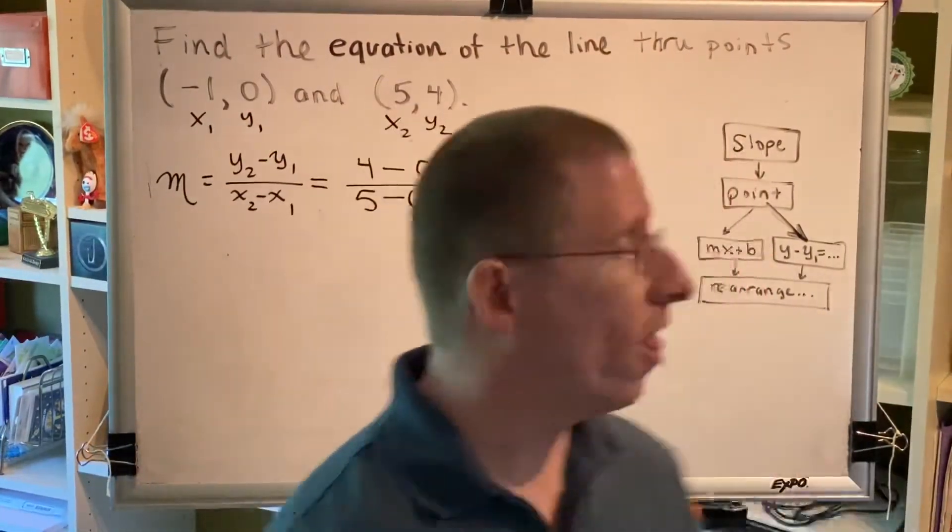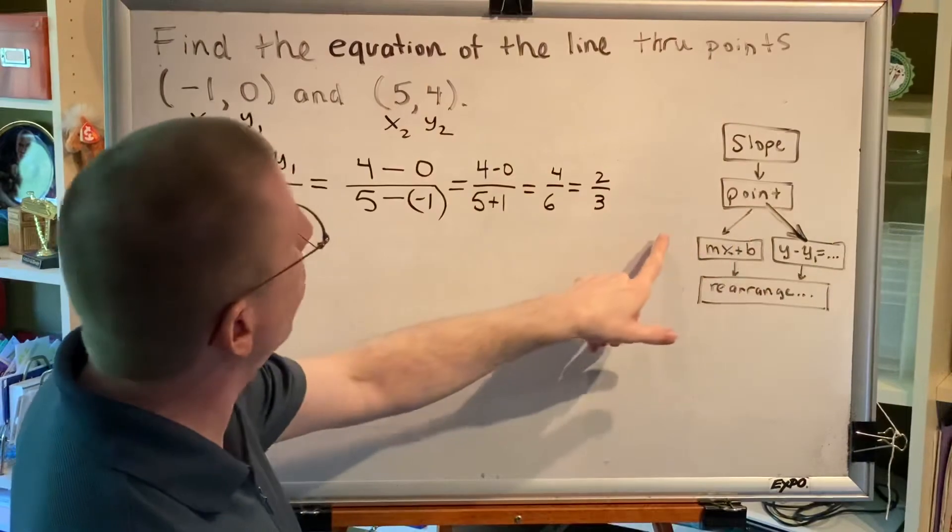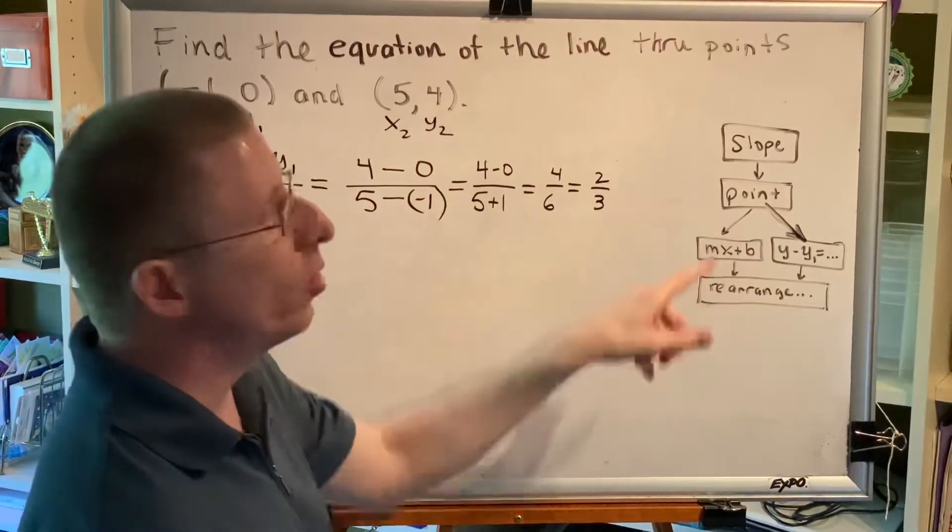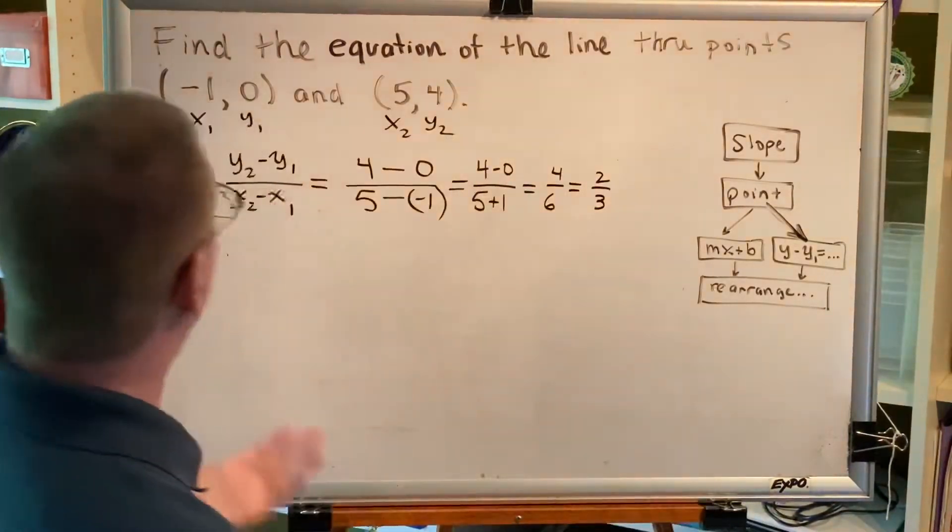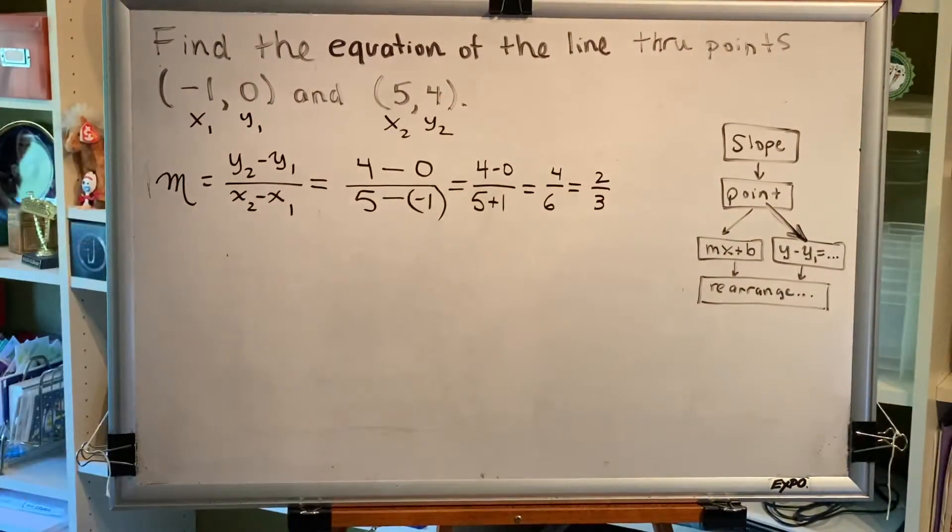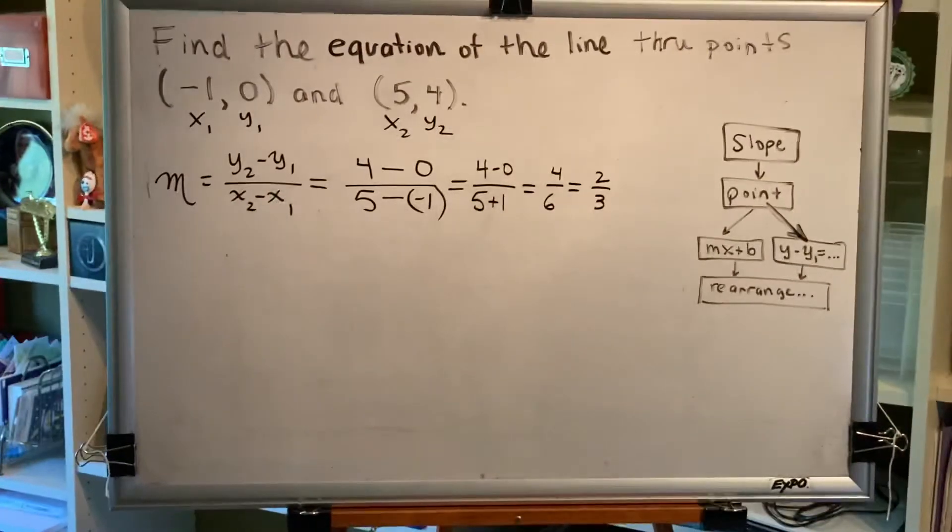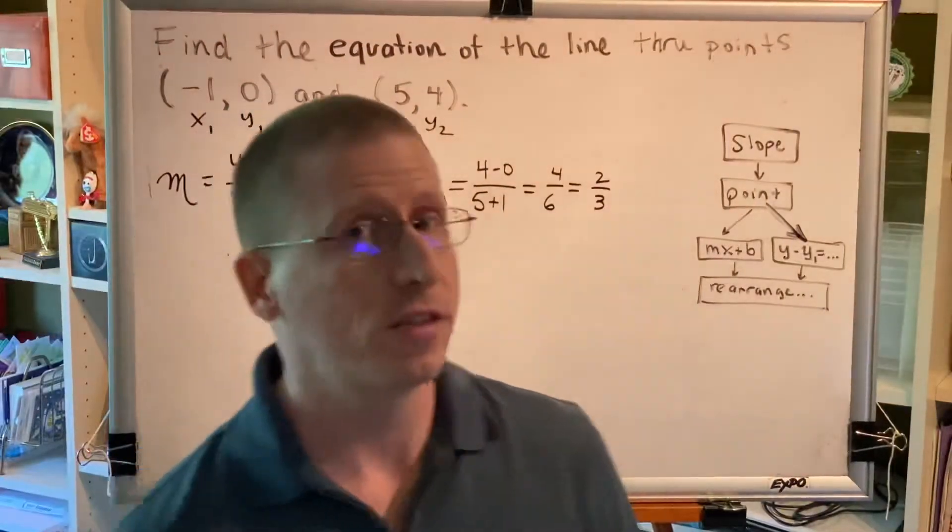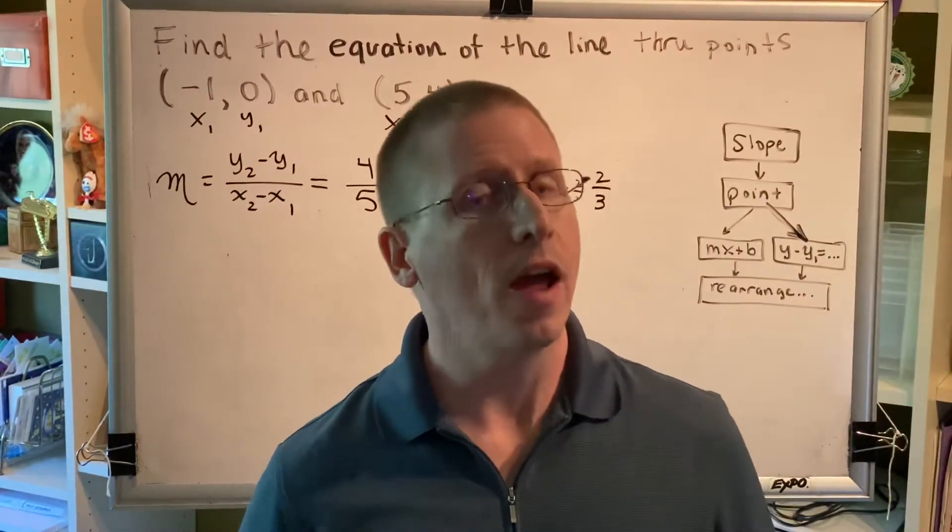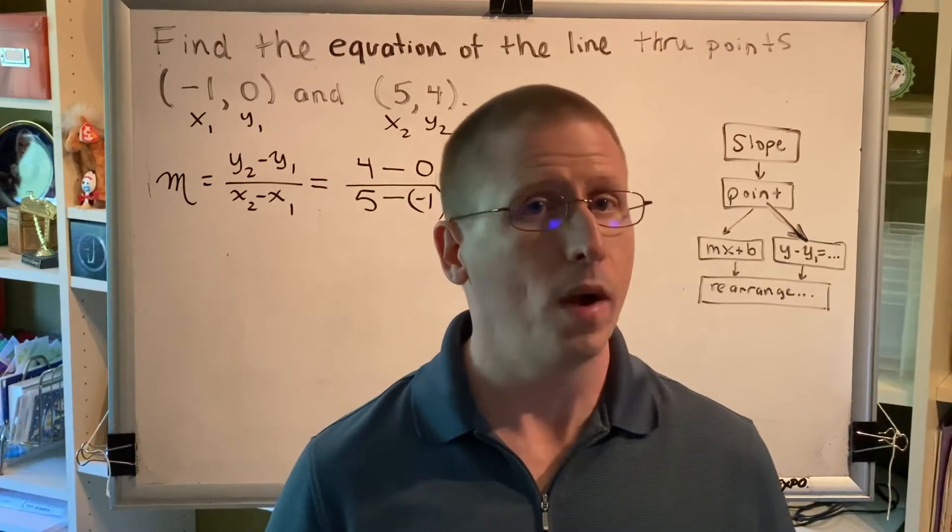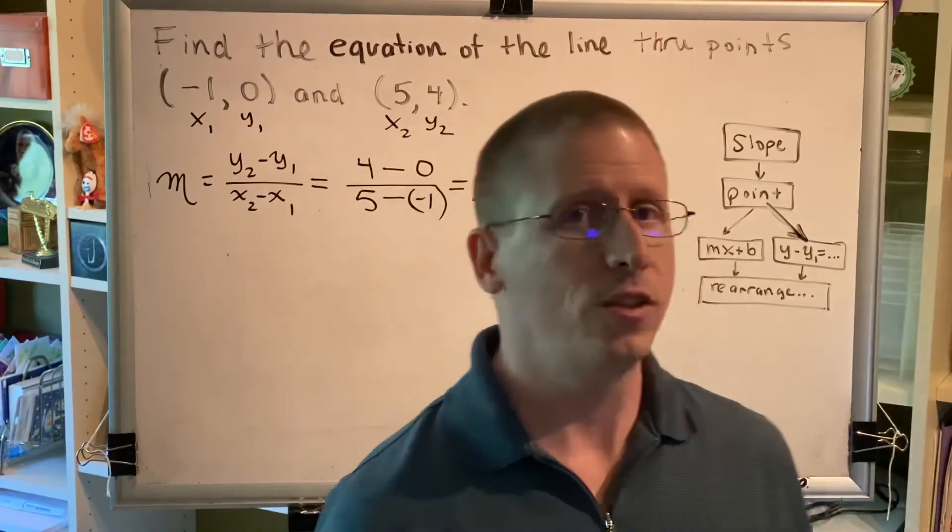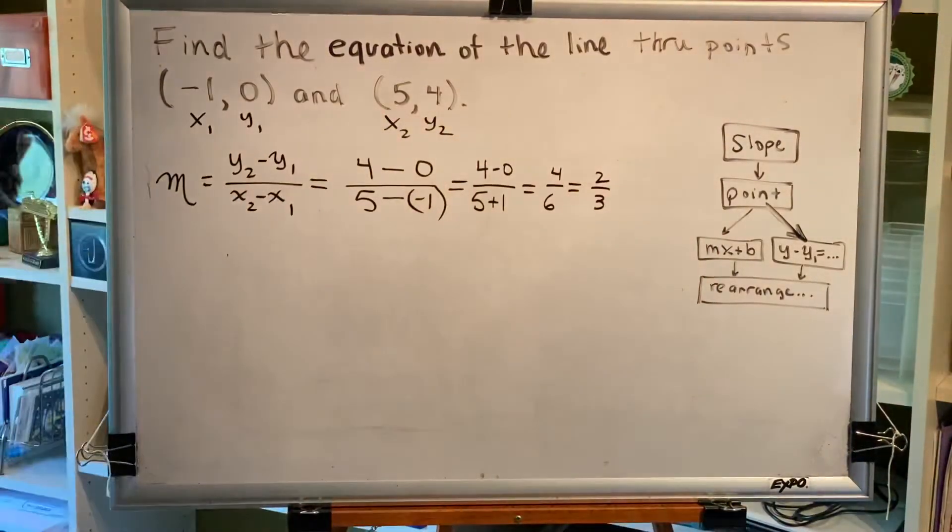We know that this path, the leftward path, is easier and we should always choose it if we have a point with an x coordinate of 0. But sadly in this problem we don't have that available. So which point should we pick, (-1, 0) or (5, 4)? You'll get the right answer no matter which one you pick. But sign errors are a very common error in algebra, so if you have the opportunity to avoid using a negative you should. Let's use the point (5, 4) because it has no negatives.